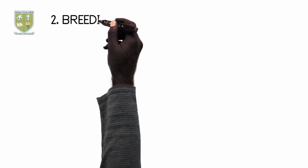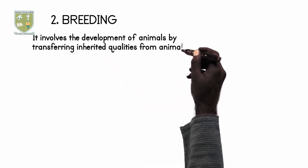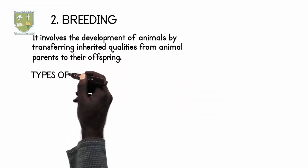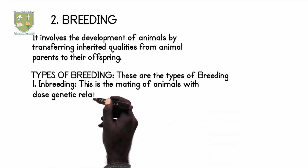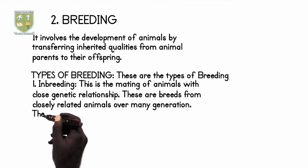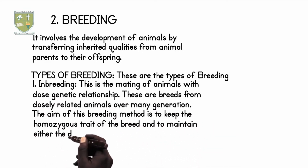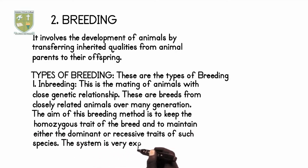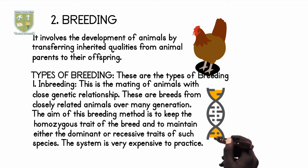2. Breeding: This involves the development of animals by transferring inherited qualities from animal parents to their offspring. Types of Breeding: 1. Inbreeding — this is the mating of animals with close genetic relationship. These are breeds from closely related animals over many generations. The aim of this breeding method is to keep the homozygous trait of the breed and to maintain either the dominant or recessive traits of such species. The system is very expensive to practice.